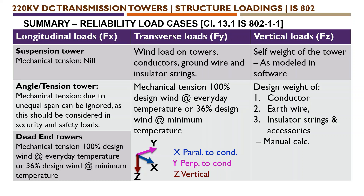For transverse loads — that is load in the Y direction, horizontal load in Y direction — we need to consider wind load on towers, conductor, ground wire, earth wire and insulator strings, along with mechanical tension: 100% designed wind at everyday temperature, or 36% designed wind at minimum temperature.